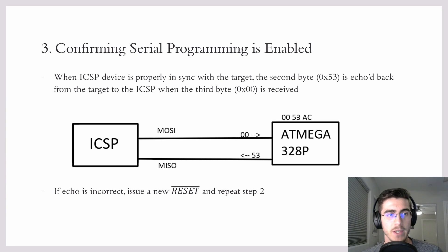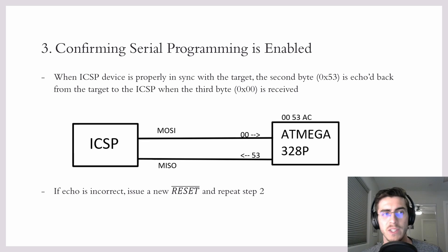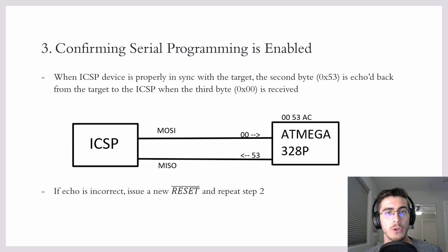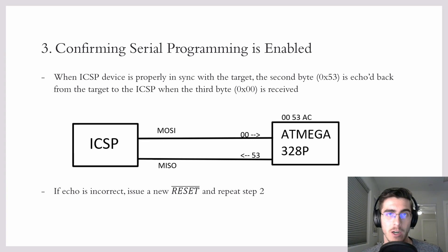Step 3 is to confirm that serial programming is enabled. If the ICSP device and target device are properly in sync, the 0x53 byte should be echoed back to the ICSP after the third byte is received. If the echo is incorrect, we must start over.